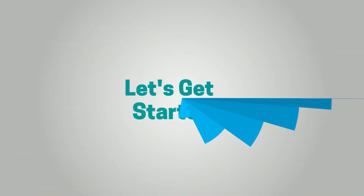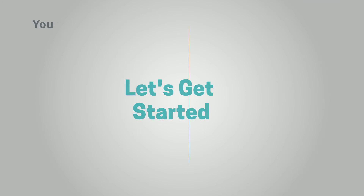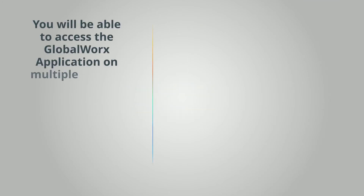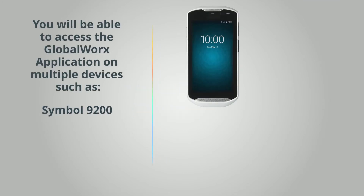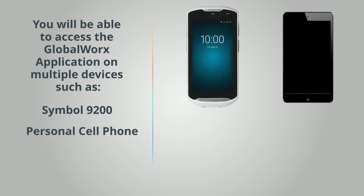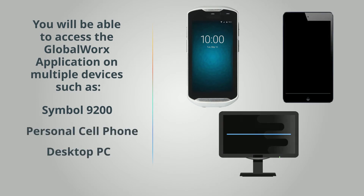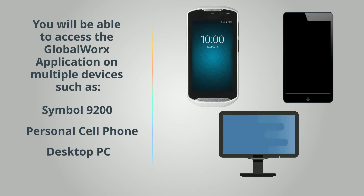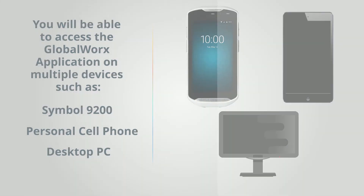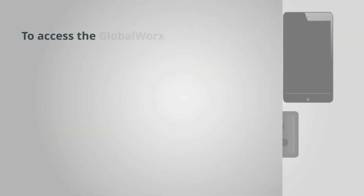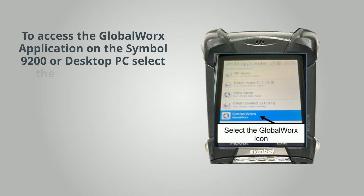Let's get started. You will be able to access the Global Works application on multiple devices such as the Symbol 9200, personal cell phone if authorized, or desktop PC. To access the Global Works application on your Symbol 9200 or desktop PC, select the Global Works icon.